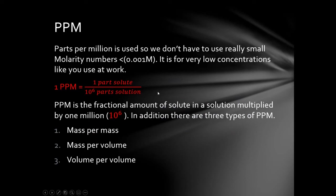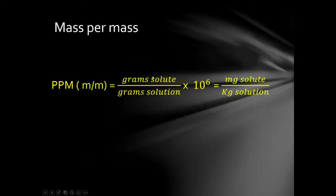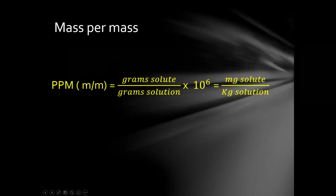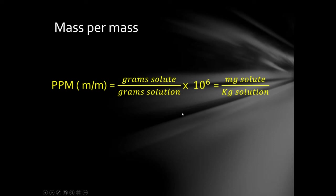Mass per mass PPM: grams of solute over grams of solution times 10⁶. An easier way: one milligram of solute in one kilogram of solution — a milligram is 10⁻³ and a kilogram is 10³, giving six decimal places, which is parts per million. Mass per volume PPM: grams per milliliter times 10⁶, or the easier version — one milligram of solute in one liter of solution.